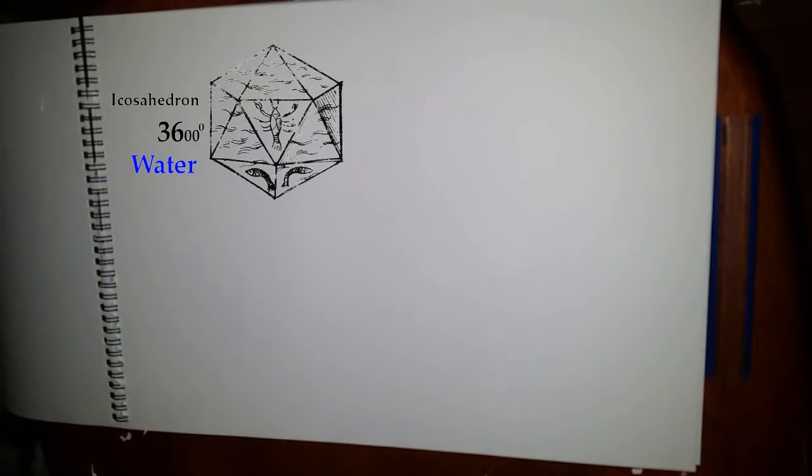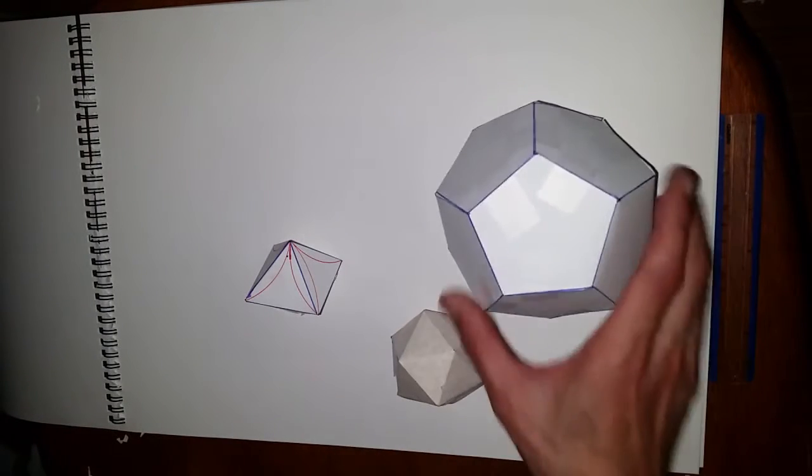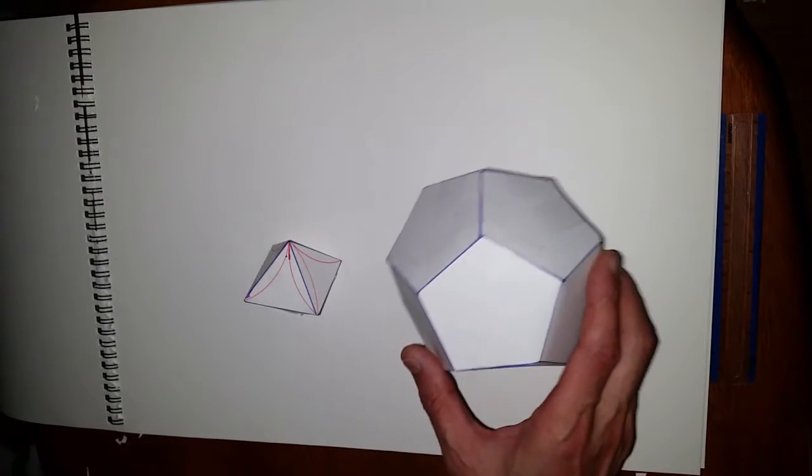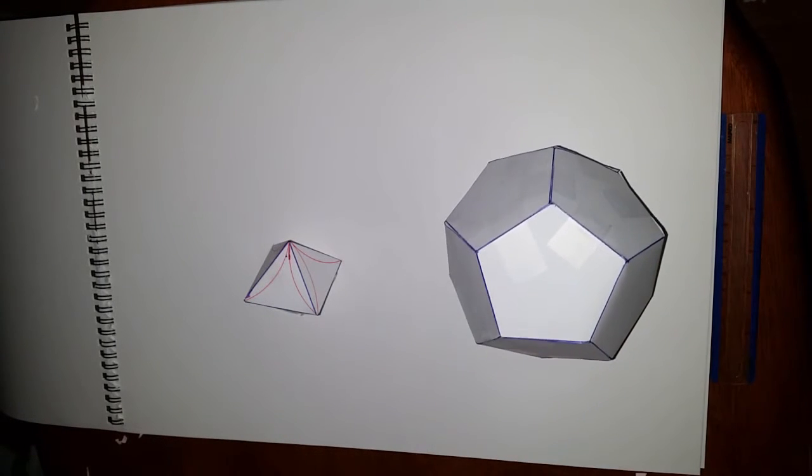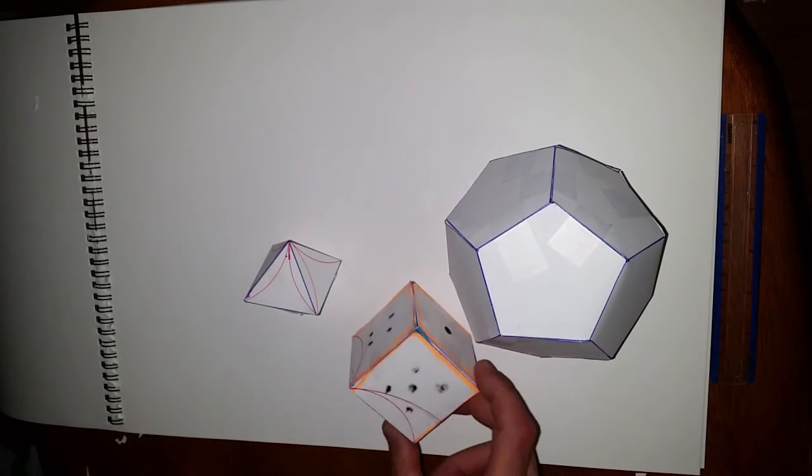In the previous video, we've done a short series where we've created the platonic solids. We have the dodecahedron, 12 sides, that represents heaven. 6480 degrees, that's how many years in a platonic season. The cube is 2160, that's how many years are in a platonic month.